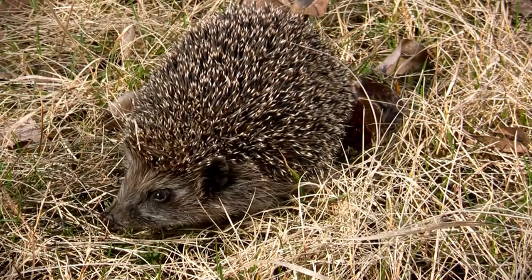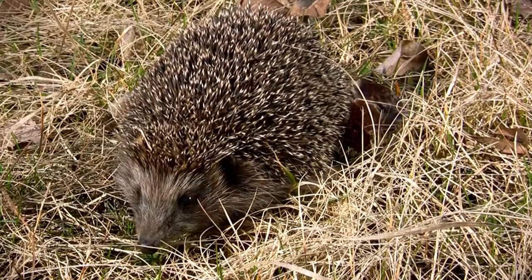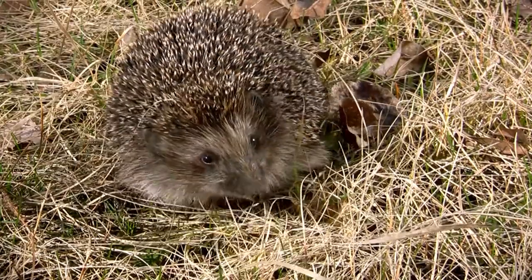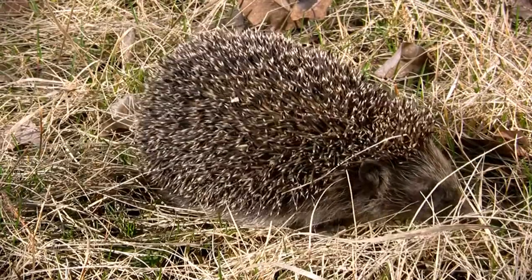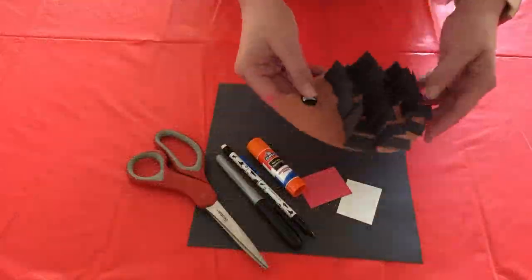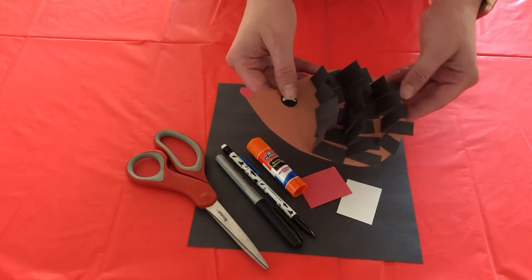Did you know that a hedgehog has between 5,000 and 7,000 quills? Muscles along the animal's back can raise and lower the quills to respond to threatening situations. So that's what we're going to do today. We're going to make a little hedgehog with our spiky little quills.